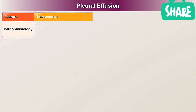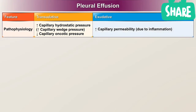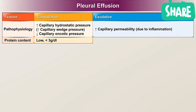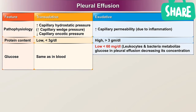Pathophysiology of transudates involves increased capillary hydrostatic pressure, that is increased capillary wedge pressure, and decreased capillary oncotic pressure. Exudative effusion involves increased capillary permeability, e.g., due to inflammation. Protein content in transudates is low, less than 3 g per deciliter, and in exudates is high, more than 3 g per deciliter. Glucose in transudates is the same as in blood. In exudates it is low, less than 60 mg per deciliter, because leukocytes and bacteria mobilize glucose in the pleural effusion, decreasing its concentration.